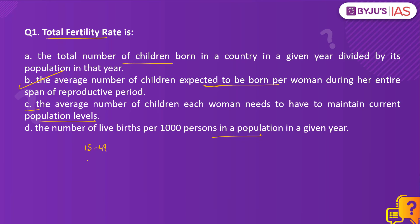This fertility rate is expressed as a number of children per woman. A TFR of 2.1 per woman is called replacement level fertility — the rate at which a given population is able to produce enough offspring to replace itself, considering that there is no immigration.